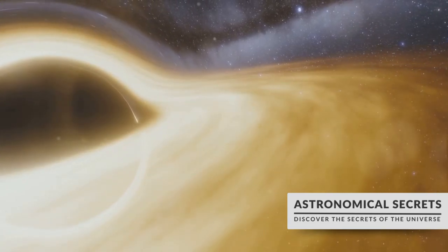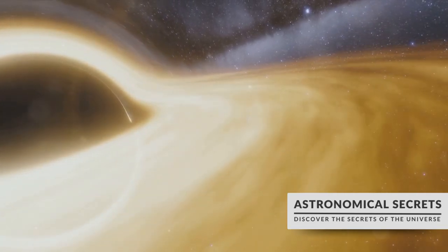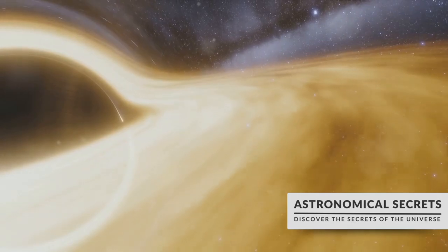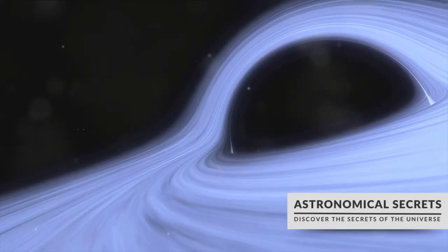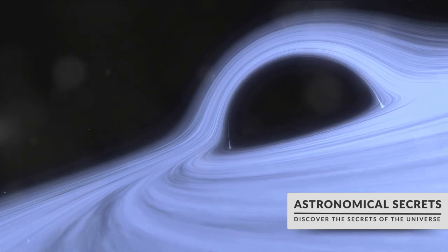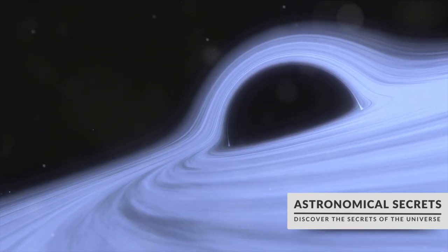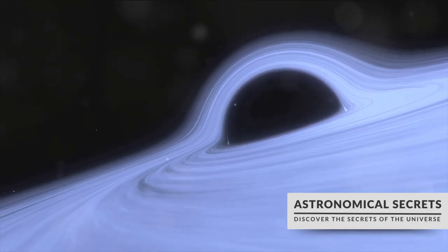But it doesn't end there. The newly formed black hole continues to grow by absorbing mass from its surroundings. It feeds on interstellar gas, dust, and even other stars. As this matter falls into the black hole, it forms an accretion disk around the event horizon, the point of no return.